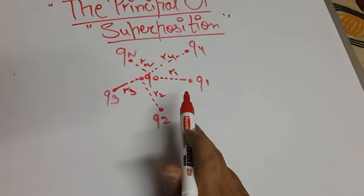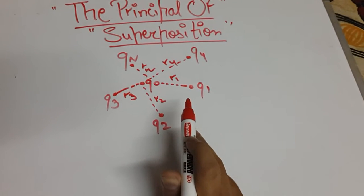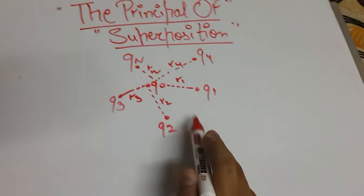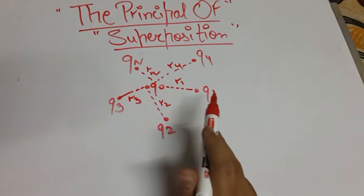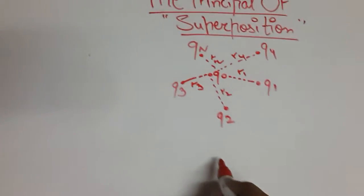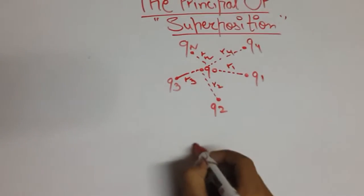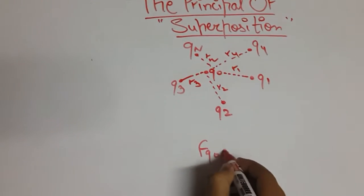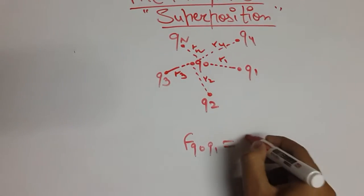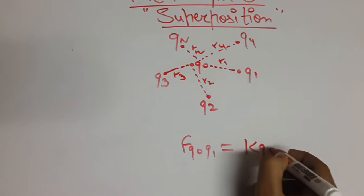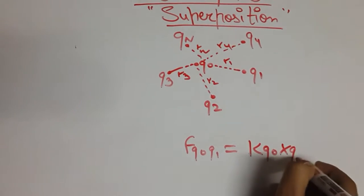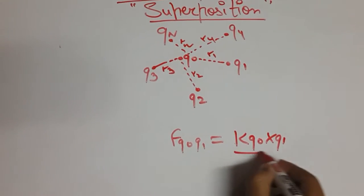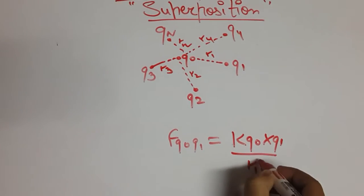So today we will find an equation by which we will know how to find the total force on q0 exerted by all other charges. We know that the equation of force on q0 due to q1 would be k q0 into q1 which is charge 2 upon distance between them.